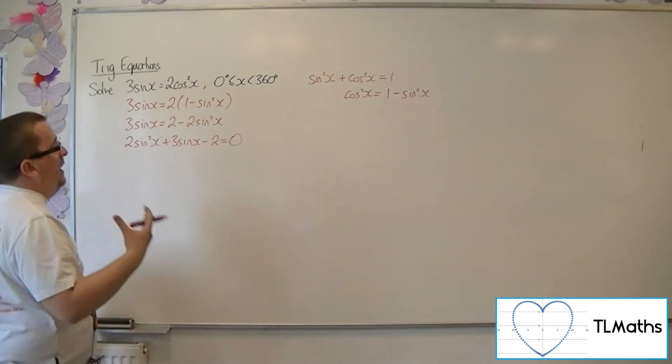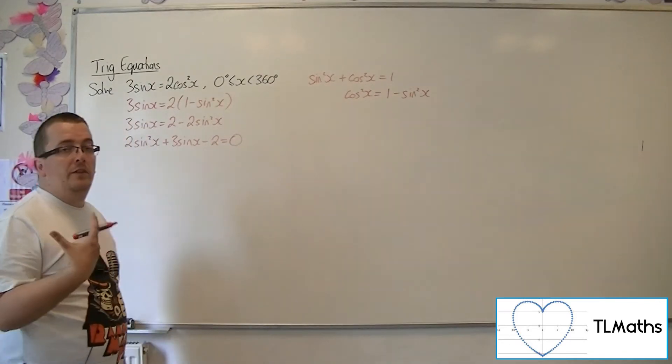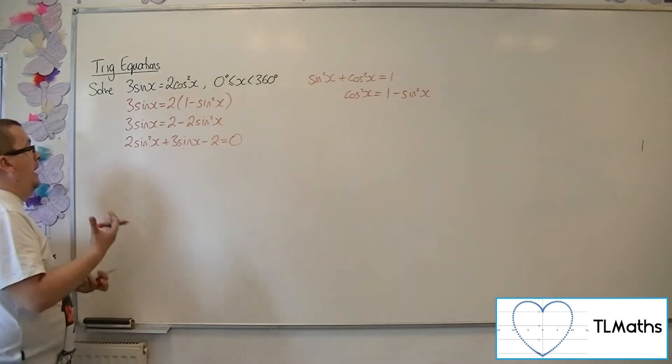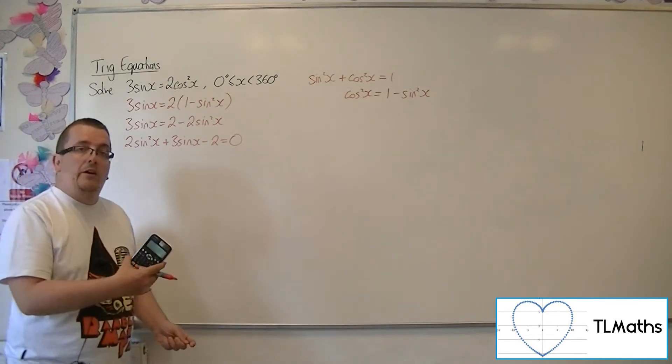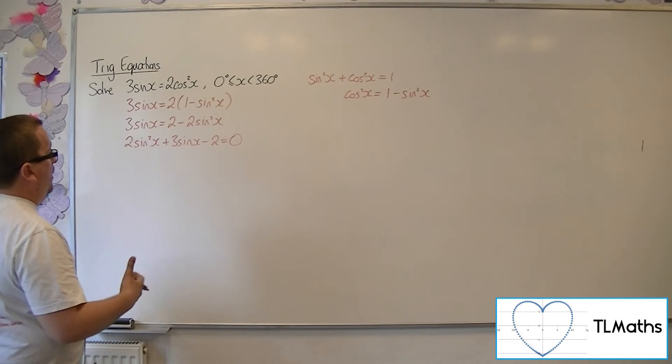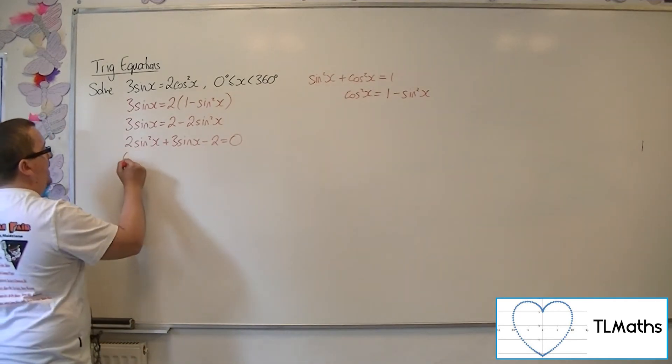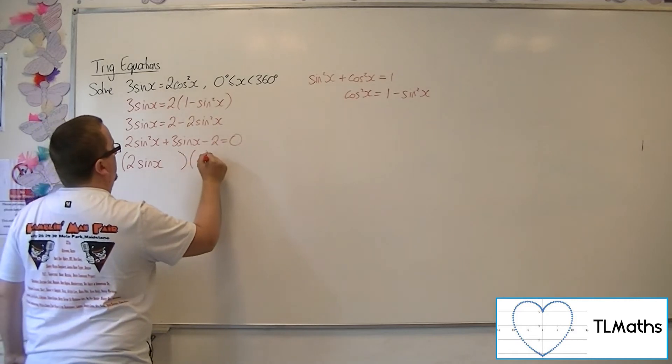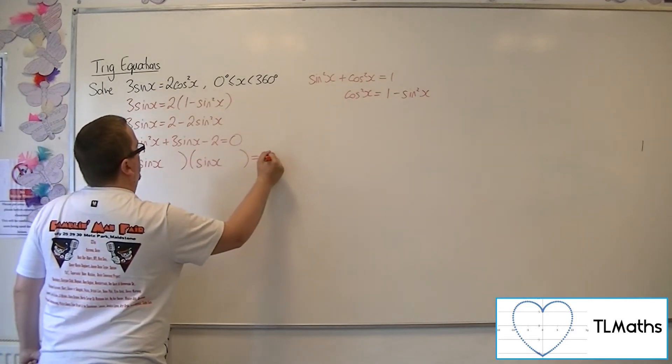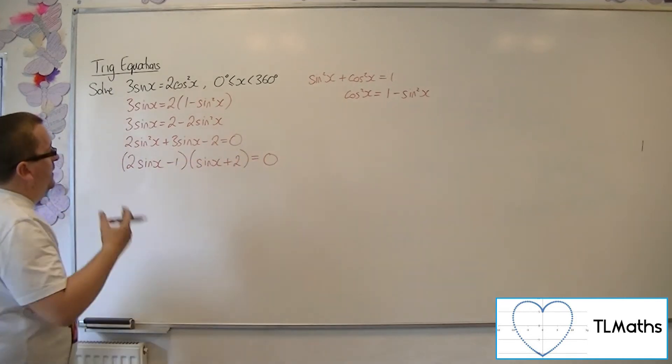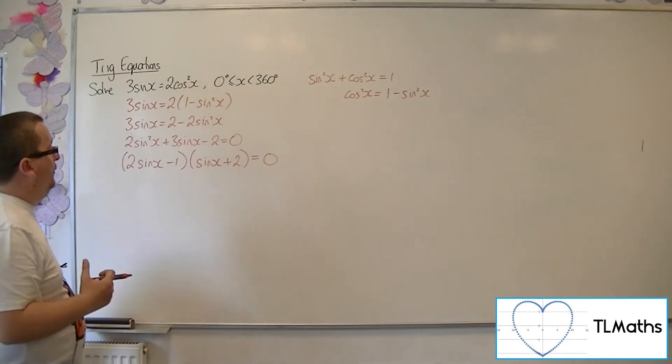And so this now is a quadratic that I can either factorize as a quadratic formula or at worst, go onto my calculator and use the quadratic solver. So this will factorize, this one, just 2 sine x, sine x. So I need that to be plus 2, that to be minus 1 to get the 3 sine x and the minus 2.